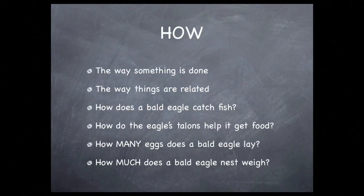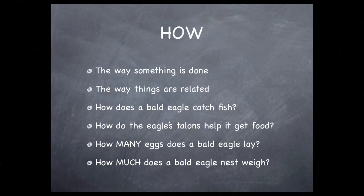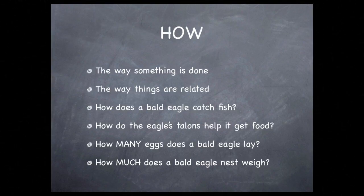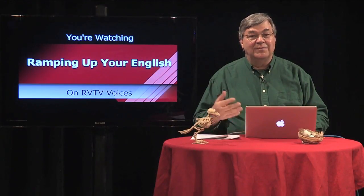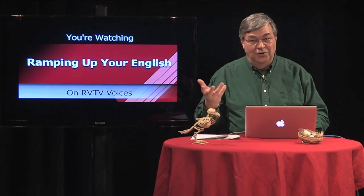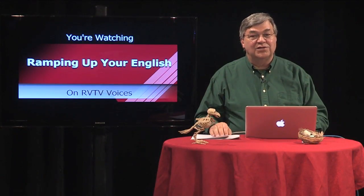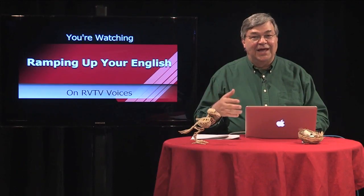Now, we reach the interrogative on our list that doesn't begin with a W. The word is how. It's tricky. How can ask for the way something is done or the way that things are related. An example is: how does a bald eagle catch a fish? Or how does the eagle's talons help it get fish? The word how can also be used to quantify, but it must have a partner word like much or many. For example: how many eggs does a bald eagle lay? Or how much does a bald eagle's nest weigh? So the interrogative how is a natural choice for asking about an animal's adaptations or about any quantity of things. It can also ask questions about the animal's life cycle, like how do bald eagles mate?